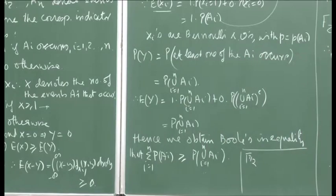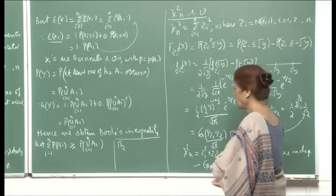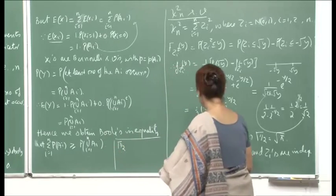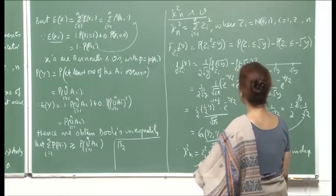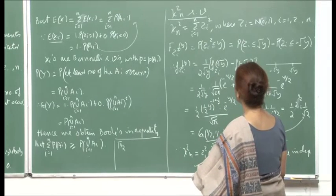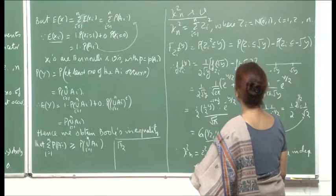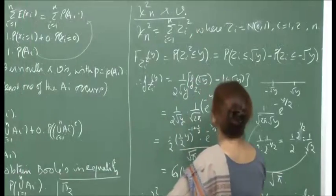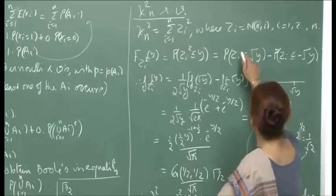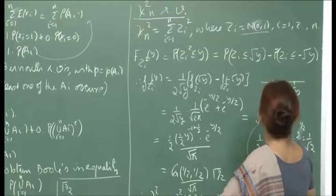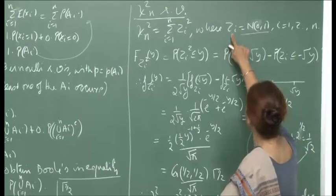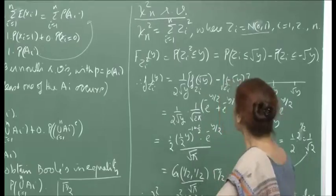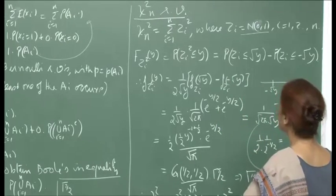Now let us continue using what we have developed about adding random variables and computing their expectations. Consider the chi-square n random variable, defined as the sum Σ Zi² for i from 1 to n, where each Zi is a standard normal variable. So E(Zi) = 0 and Var(Zi) = 1 for each i.